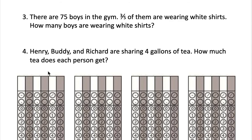And the last one: Henry, Buddy, and Richard are sharing 4 gallons of tea. How much tea does each person get? First, think about what makes sense. Count your people, count your gallons of tea, and think: are they going to get a whole gallon? Are they going to get less than one? Will they get more than one? Think about what makes sense, then put your answers in the grids. Write and bubble them, and do your best.